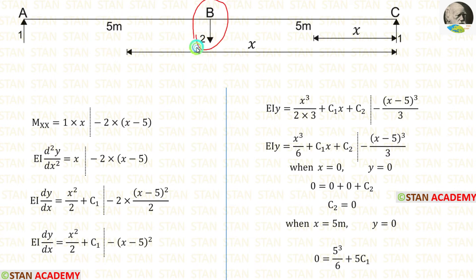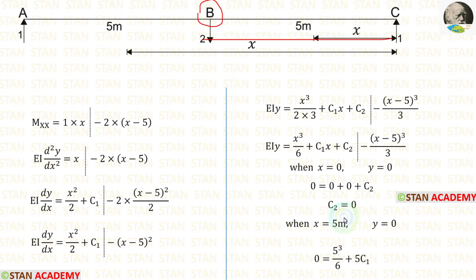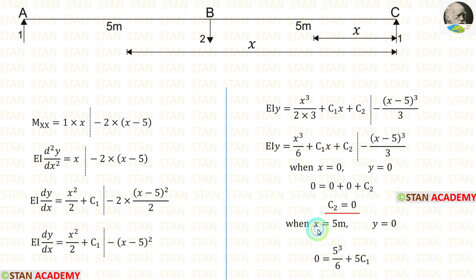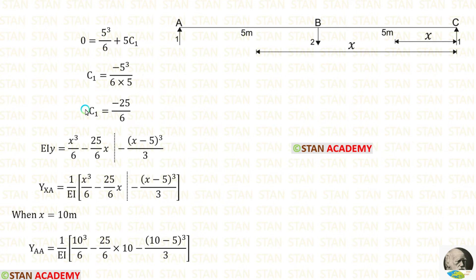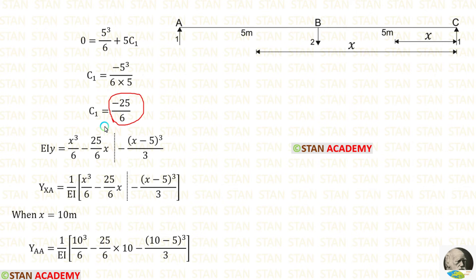At point B, we also have a vertical support, so the deflection will be 0. At point B, x equals 5 meters, so when x=5, y=0. We apply C2=0, x=5, and y=0 in the EIy equation. After the calculations, we get C1 equal to minus 25/6. In the EIy equation, let us apply C1=−25/6 and C2=0. After applying these two values, we get the final expression.